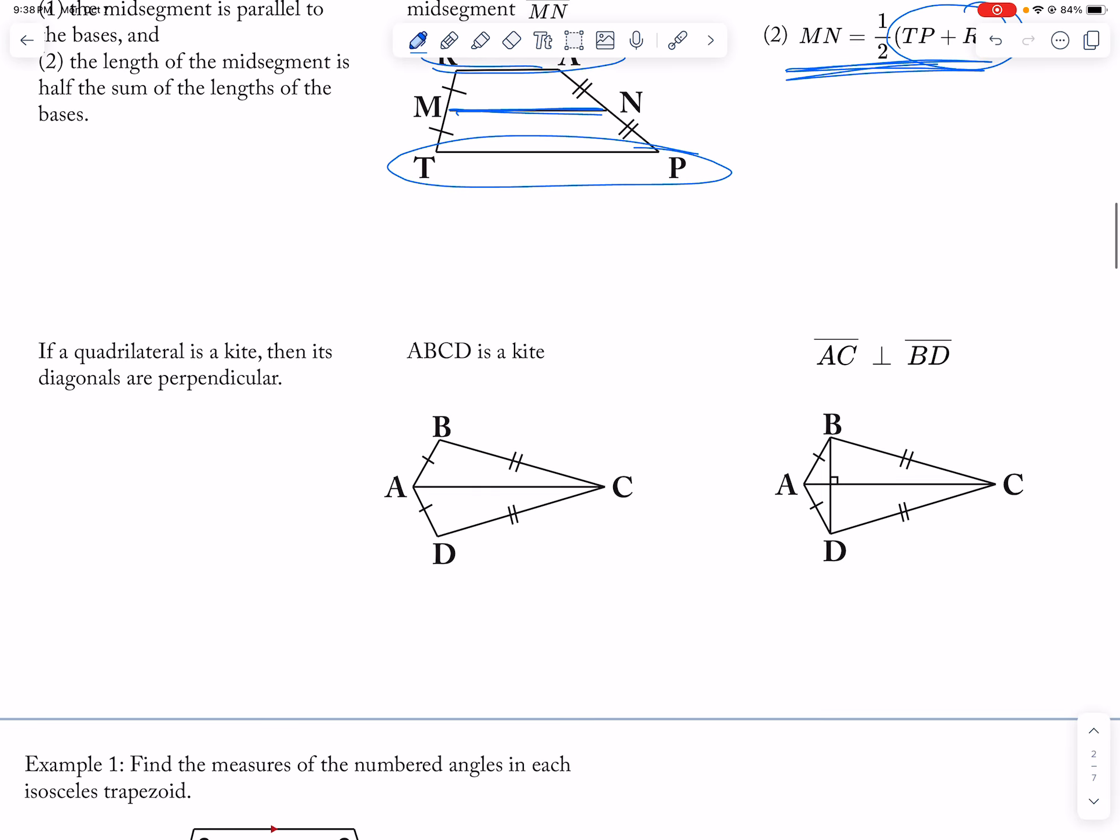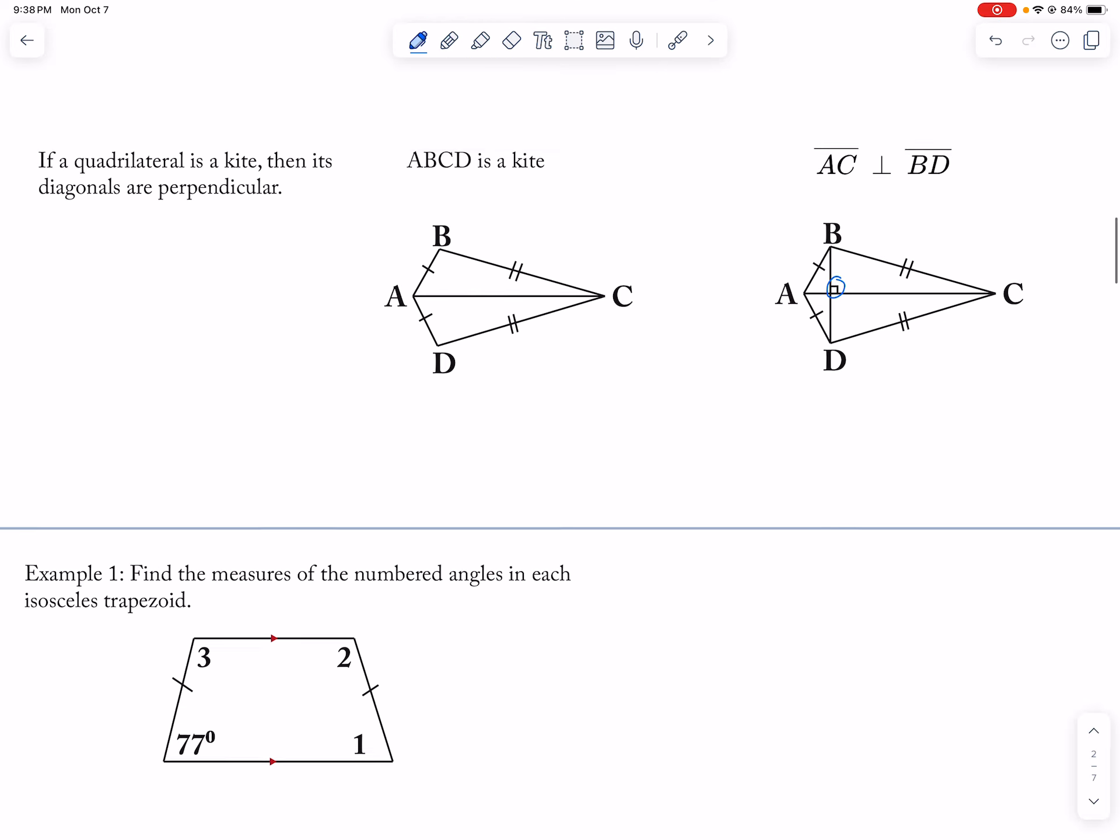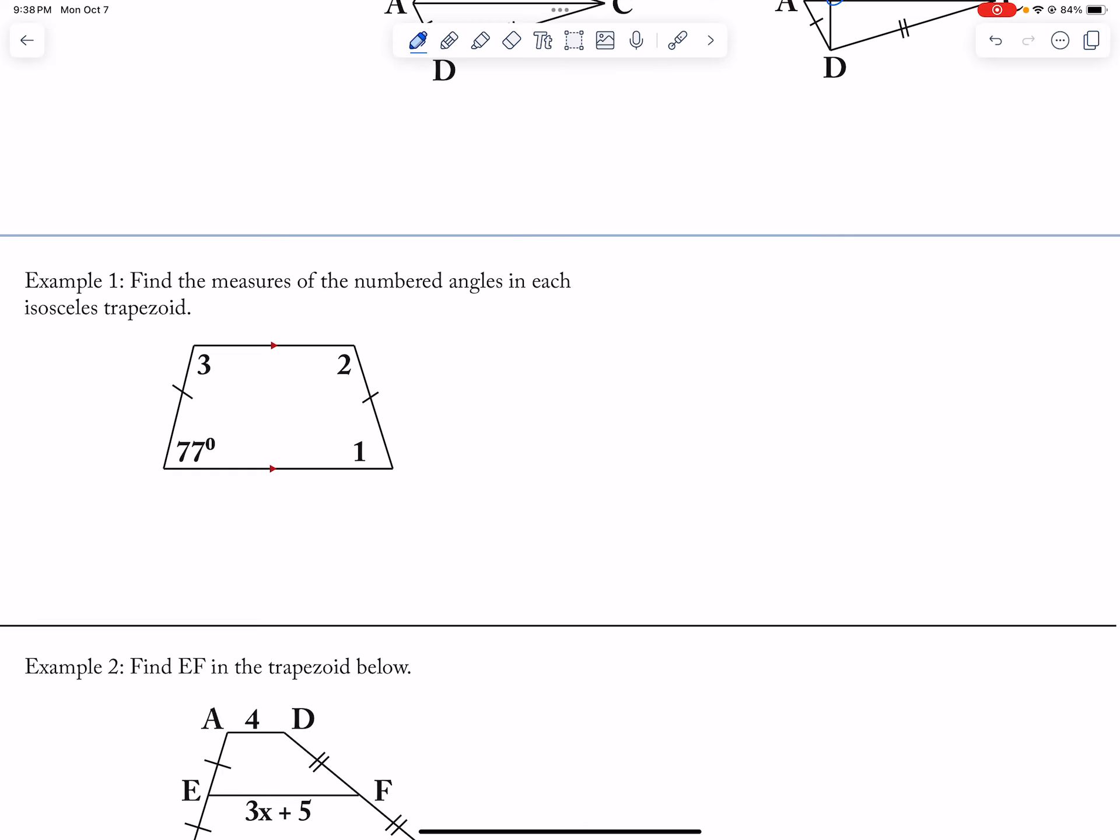And then a kite, this is perpendicular here. So if I'm looking to find the measures of the numbered angles, measure of angle one is equal to 77 because it's an isosceles trapezoid. And then measure of angle three is equal to 103 because three plus 77 is equal to 180.